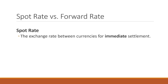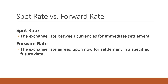Spot rate is the exchange rate between currencies for immediate settlement — that is, the transactions should happen now. Forward rate, on the other hand, is the exchange rate agreed upon now for settlement in a specified future date.